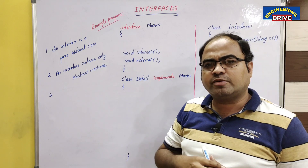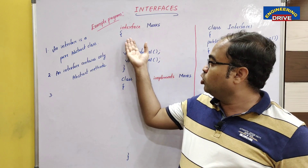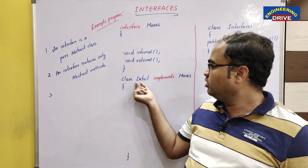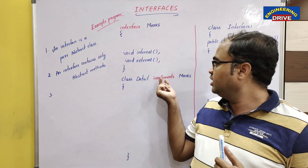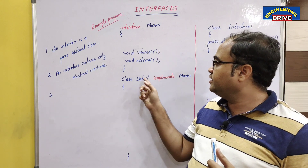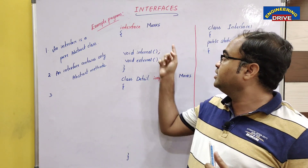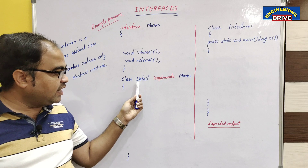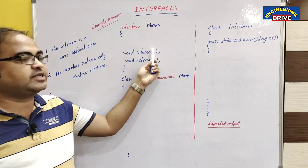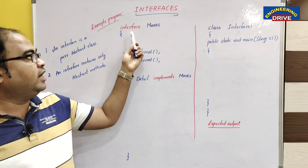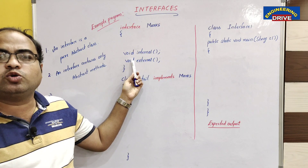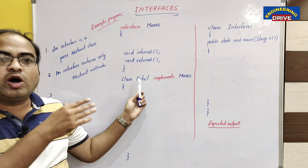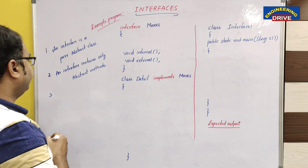So what is the use of these abstract methods? The class which is going to implement this interface provides the use. I have taken one class named 'detail' that implements 'marks', which means this class wants to implement the marks interface. Implementing means this class should provide definitions to the abstract methods. Interface gives only the instructions — what to do — but the class that is going to implement the interface needs to know how to do it.